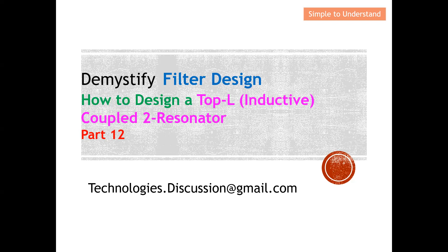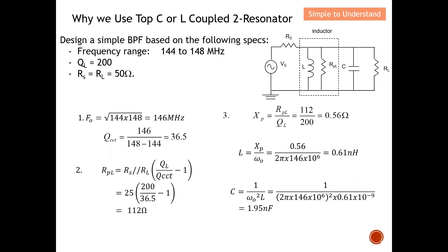Firstly, let's understand why we need to use Top-C or Top-L coupled two-resonators. This is also a discussion I've done previously. In this example I basically discussed how to design a bandpass filter based on a parallel resonator. You can see that once the spec is given — for example, once we have the frequency range, the Q quality factor value, and the resistor from the source and also from the load.